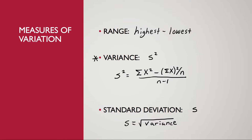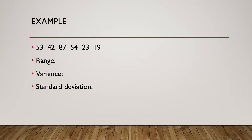So let's look at a couple of problems. Our first example has six data values and asks us to find the range, the variance, and the standard deviation. I'm going to do the range first. The range is going to be the largest value, which would be 87, minus the smallest value, which would be 19. So 87 minus 19 gives me a range of 68.